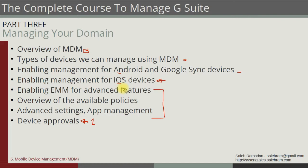We can control what apps are allowed to be installed from the App Store or the Play Store. We can make a blacklist for all applications and then make a specific whitelist for applications we want our users to use. This is useful if you have company-owned devices and do not want anything unrelated to work installed on them.